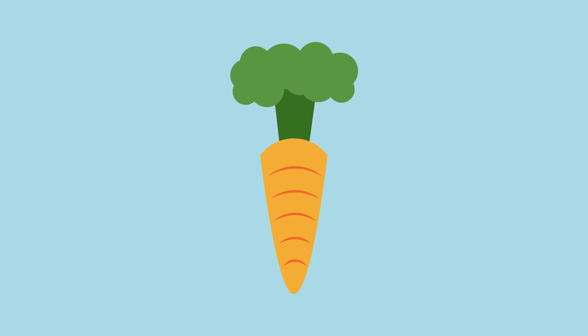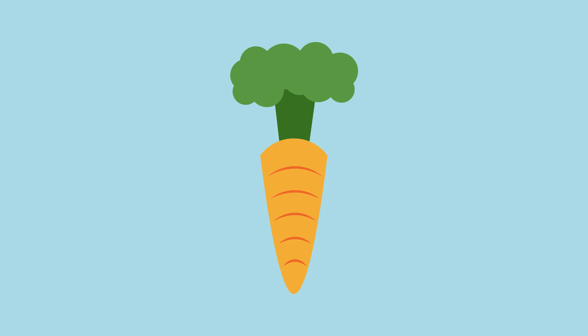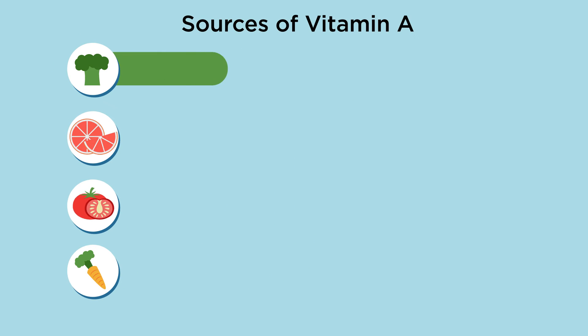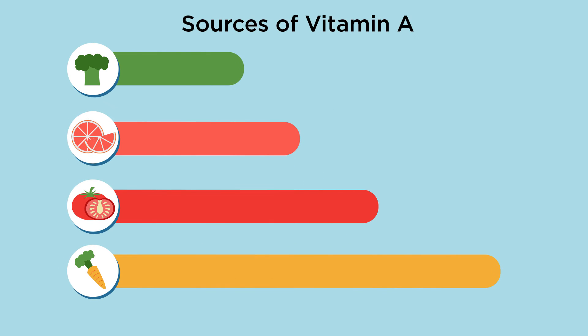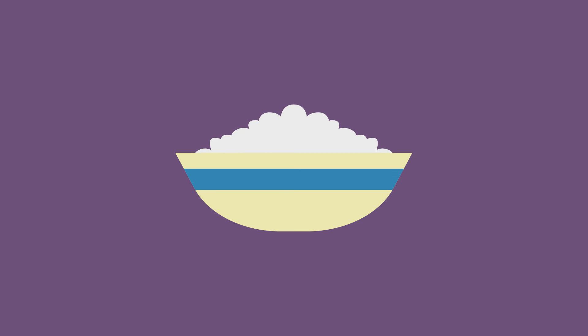Have you ever been told that eating carrots helps you see in the dark? This is because carrots are a good source of vitamin A, which is essential for healthy vision. A common problem in some countries is a deficiency in vitamin A because people have a diet mainly made up of cereals like rice with few fresh fruits and vegetables.